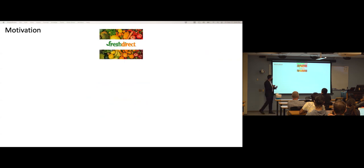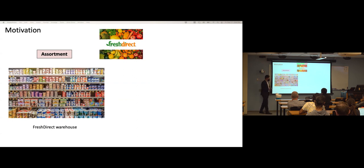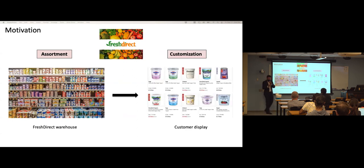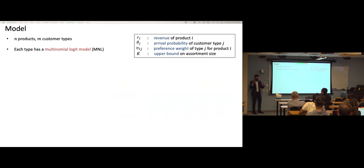Same thing for online groceries like FreshDirect: in the first stage they select a set of yogurts for their warehouse — that's the assortment problem. Then when customers arrive on the platform, they can show a personalized, customized subset depending on the customer type.